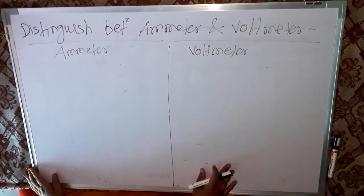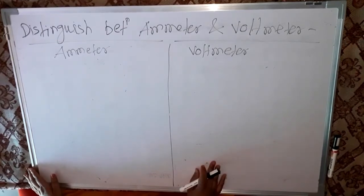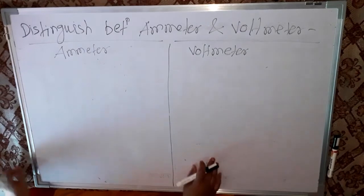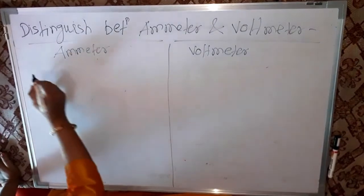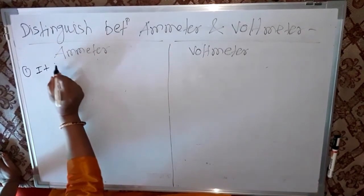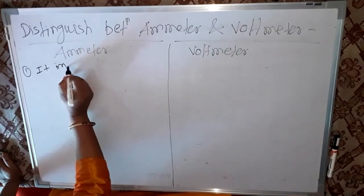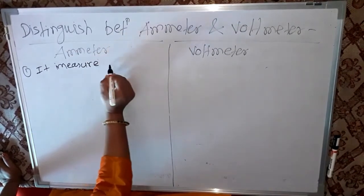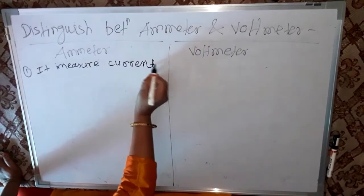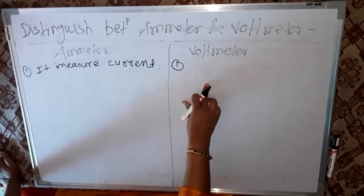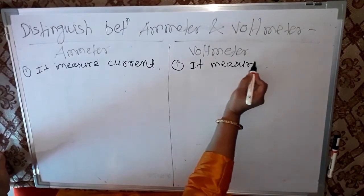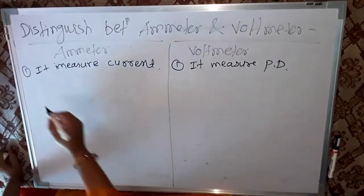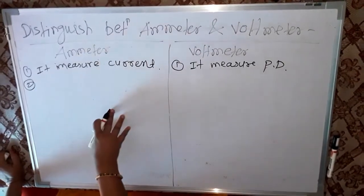Distinguish between ammeter and voltmeter. This is asked in exams for four marks — it is a very important bit. First point: ammeter measures current, whereas voltmeter measures potential difference (PD).